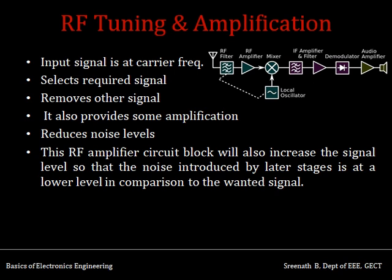The carrier signal traveling through the channel experiences some reduction in power levels, so amplification is done at the RF stage. Noise may also enter the signal during transmission through the channel and has to be removed. The RF stage selectively removes frequencies, chooses required ones, and amplifies the signal to account for noise that might be introduced at later stages. At this point, the signal is still at the carrier frequency.